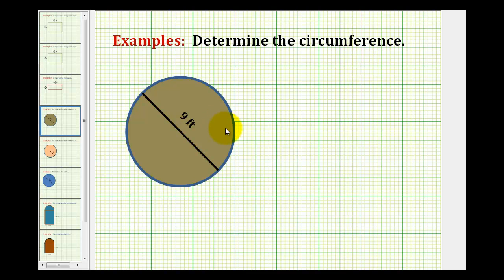We need to determine the circumference of the given circle, and the circumference is the same as the perimeter, which would be the distance around the circle, highlighted here in orange.